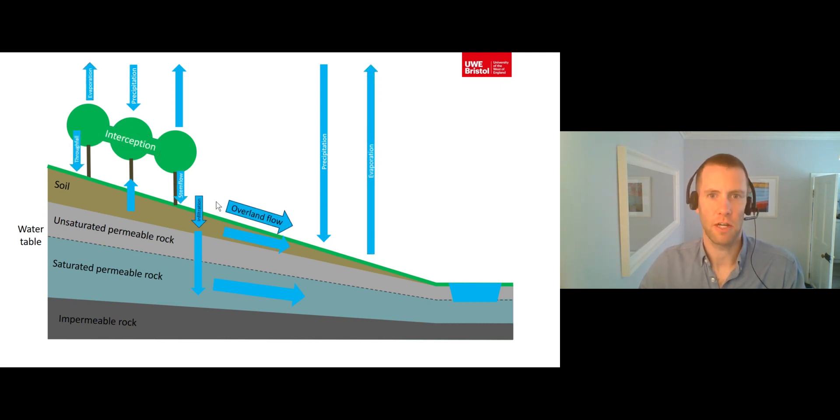Once water has reached the hill slope surface, it is usually infiltrated vertically downwards through pores in the soil. Infiltration capacity is the maximum rate at which a surface can absorb precipitation.